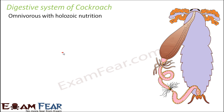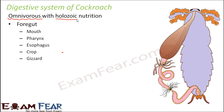Cockroaches are omnivorous, meaning they feed on both plants as well as animals — similar to human beings. They have holozoic nutrition, which means intake of solid food. For example, they can feed on hair, small insects, and cooked food particles.